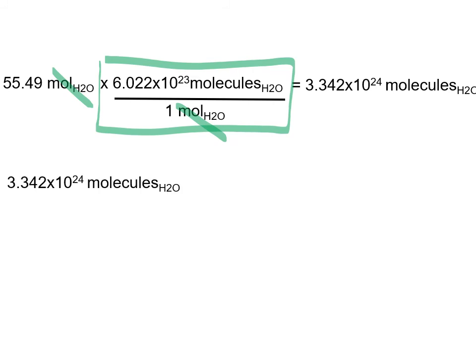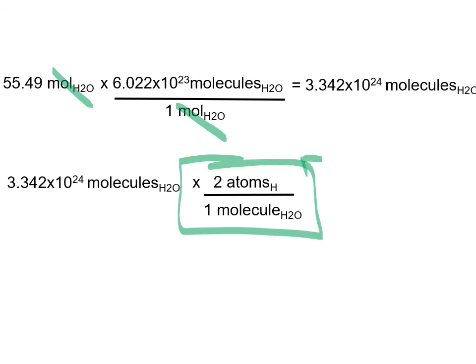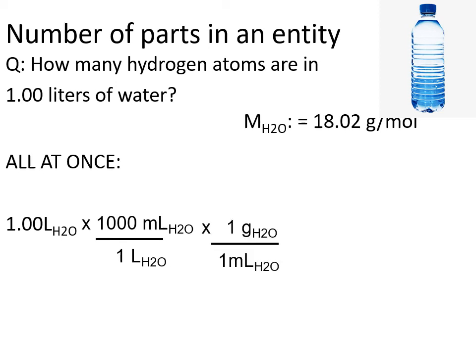We want hydrogen atoms, not just molecules. For every molecule of H₂O there are two atoms of hydrogen, so we use the molecular formula as a conversion factor: 2 atoms H per 1 molecule H₂O. Molecules of water cancel out and atoms of hydrogen carry through, giving 6.68 × 10²⁵ atoms of hydrogen in one liter of water. If we write out the answer at each step we're more likely to copy something incorrectly.